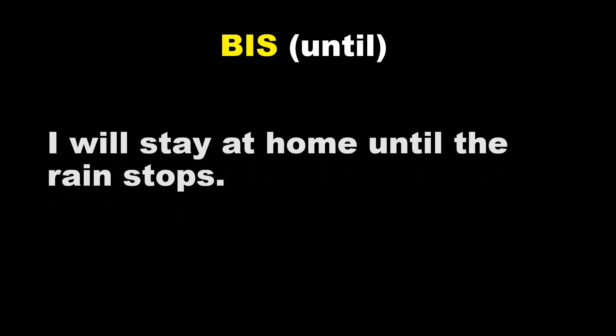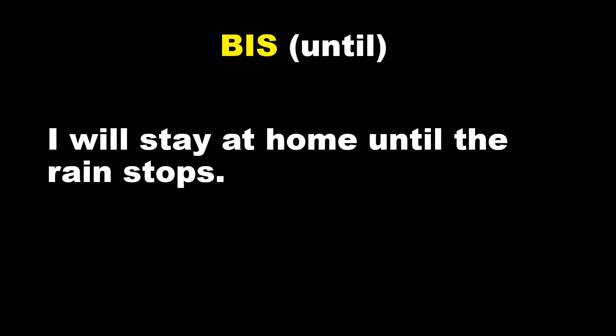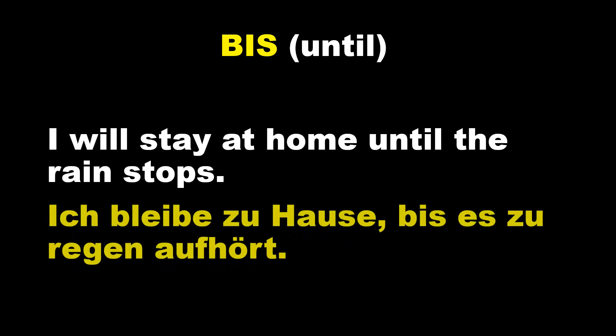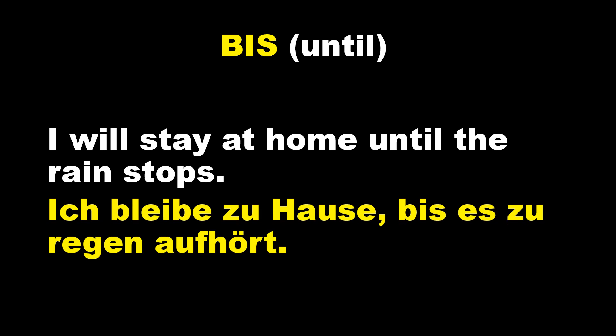Our next word is bis, which means 'until.' Let's see this example: 'I will stay at home until the rain stops.' In German: Ich bleibe zu Hause, bis es zu regnen aufhört. Here the verb is aufhören, which means 'to stop.' Again, with bis, the verb position is at the end of the sentence, and the subordinating clause starts with the word bis. Quite easy to understand.